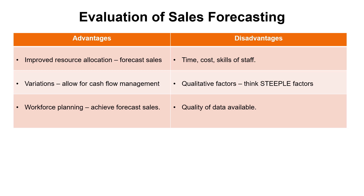Workforce planning is another benefit — if you know the future target, do you have sufficient staff with sufficient skills in place? If not, what are your recruitment strategies? Drawbacks include time, cost, and the skills of the people carrying out the technique. The averaging approach also ignores qualitative factors because it's purely based on numbers. Think about other factors that might impede your ability to achieve the forecast sales figure, such as changes in the external environment — political, economic, or legal factors — and also consider the quality and accuracy of your underlying sales data.